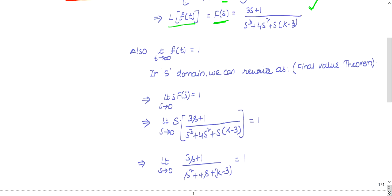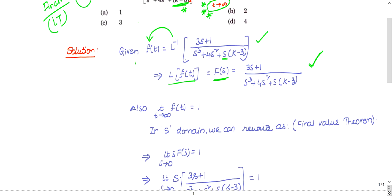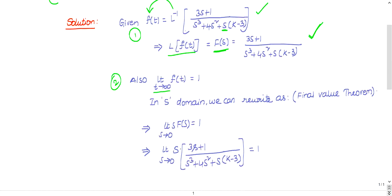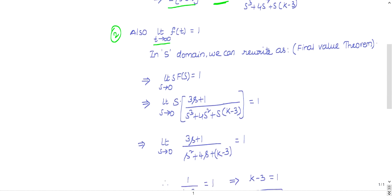The first given information is the expression for f(s), and the second given information is limit as t tends to infinity of f(t) equals 1. These are the two given pieces of information. Now let's write the final value theorem.